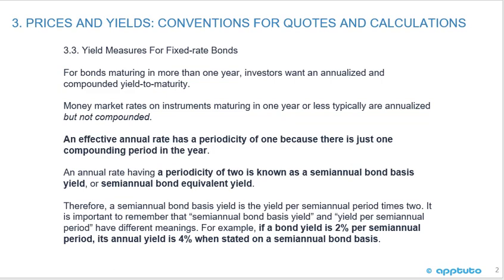For bonds maturing in more than one year, investors want an annualized and compounded yield to maturity. Money market rates on instruments maturing in one year or less typically are annualized but not compounded. An effective annual rate has a periodicity of 1 because there is just one compounding period in the year. An annual rate having a periodicity of 2 is known as a semiannual bond basis yield or semiannual bond equivalent yield, and a semiannual bond basis yield is the yield per semiannual period times 2.